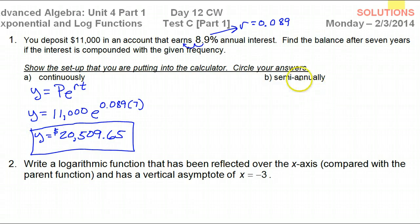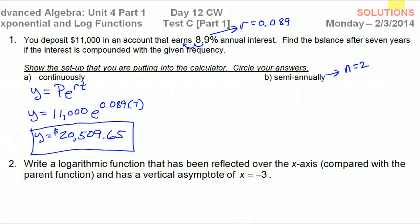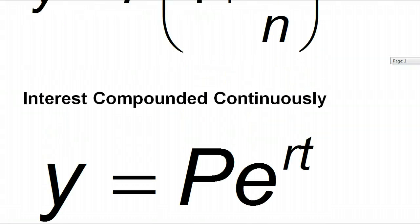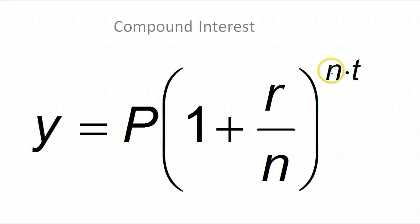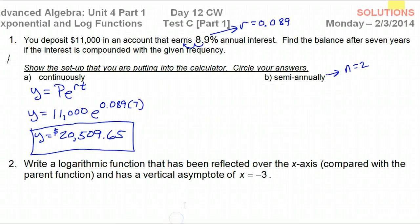For part B, it says semi-annually — this gives us the N value in the general compound interest formula. Semi-annually means twice a year, so N = 2. If it's annually, N = 1; semi-annually, N = 2; quarterly, N = 4; monthly, N = 12; daily, N = 365. It's all about what the N value is.